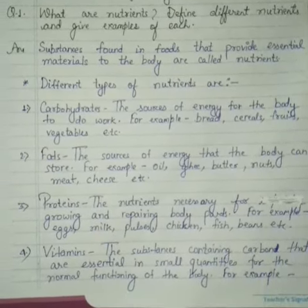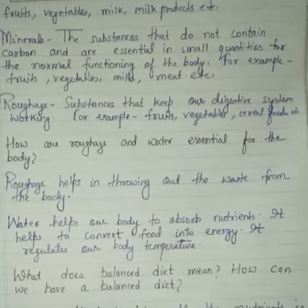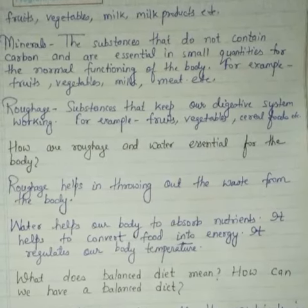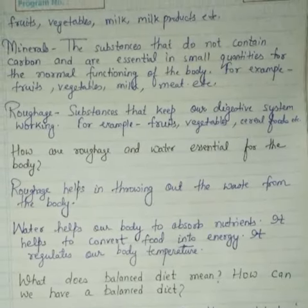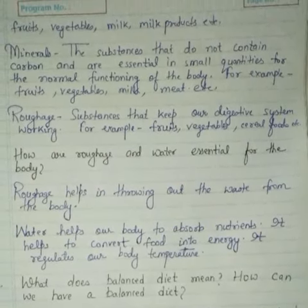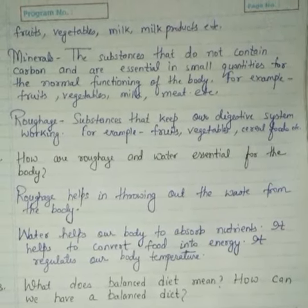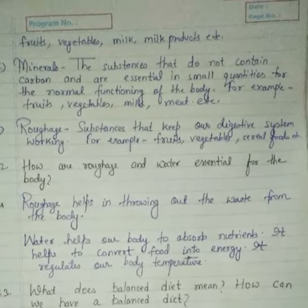Minerals — substances that do not contain carbon and are essential in small quantities for the normal function of the body. Examples: fruit, vegetables, milk, etc.